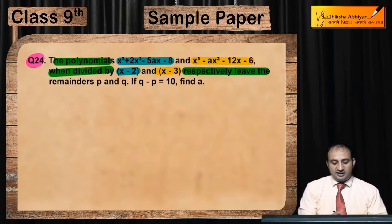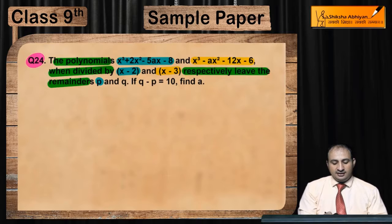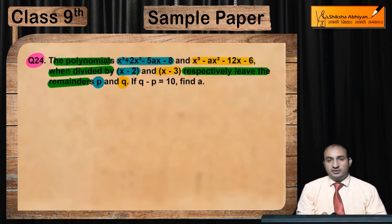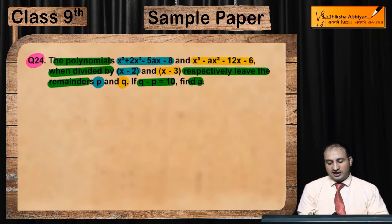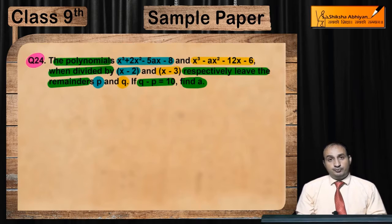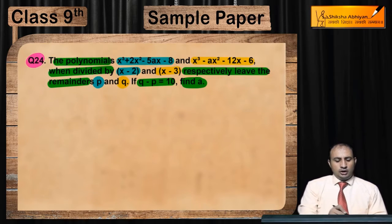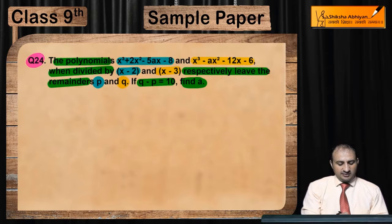...leave the remainder p and q. If p minus q is 10, find the value of a. So we need to find the value of a, and q minus p equals 10 is given. Let me write down the given information one by one.